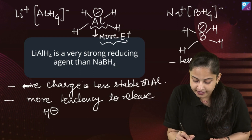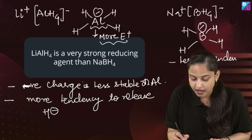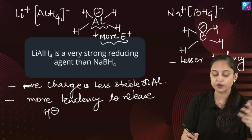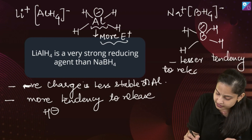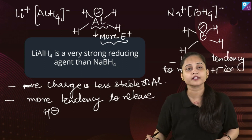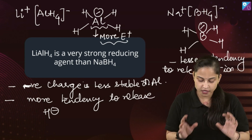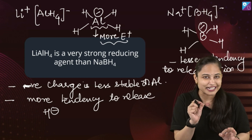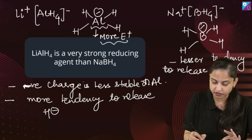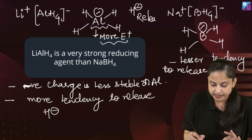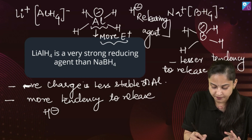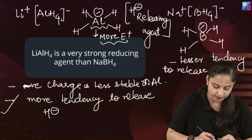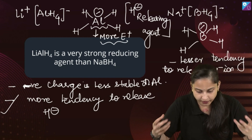Because the negative charge is less stable on aluminum, LiAlH4 has more tendency to release hydride ion in comparison to sodium borohydride. Boron is more electronegative than aluminum, so BH4⁻ can actually tolerate the negative charge better than aluminum and has lesser tendency to release hydride ion. We can say that both are hydride releasing agents, but lithium aluminum hydride has more tendency to release the hydride ion.